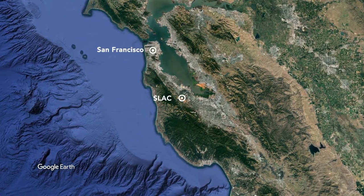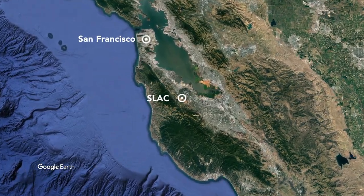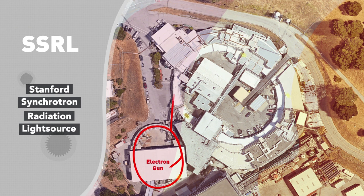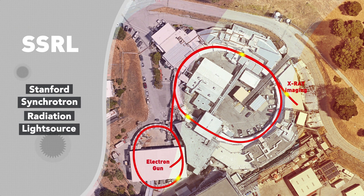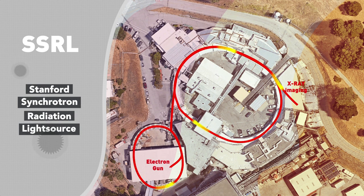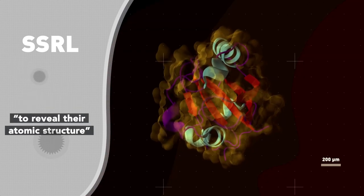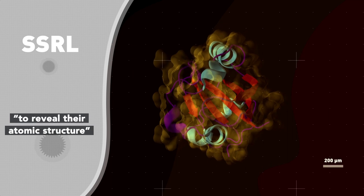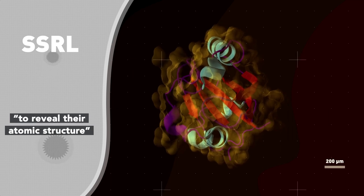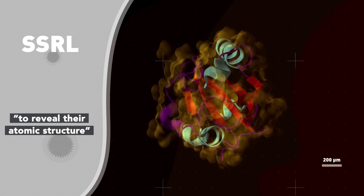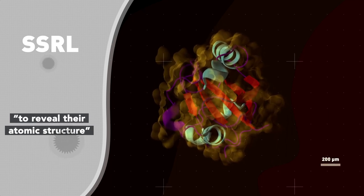At the Stanford Synchrotron Radiation Light Source, SSRL, researchers shoot powerful X-ray beams at proteins and other molecules extracted from the virus to reveal their atomic structure and see how their shapes change as they bind to other molecules.